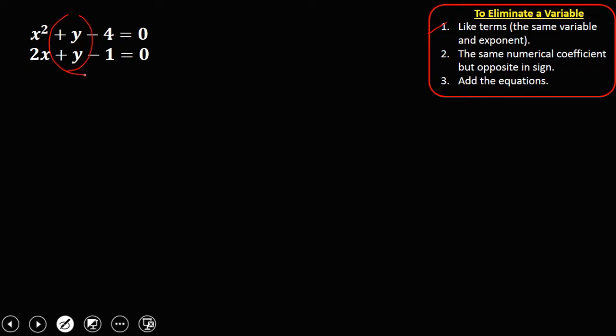Check the numerical coefficient if the same and opposite in sign. Now since the same numerical coefficient but not opposite in sign, we need to multiply one of this equation by negative 1 to make the sign opposite. So I choose to multiply the second equation by negative 1.